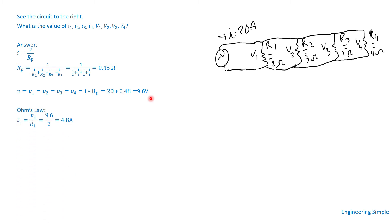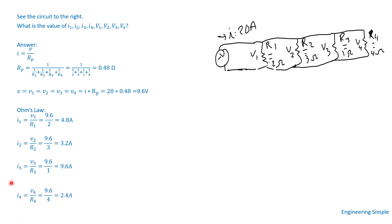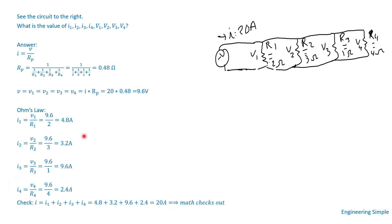Now we apply Ohm's law for each resistor. I1 equals V1/R1 equals 9.6/2 equals 4.8 amps. We do the same for I2, I3, and I4. As a check, the sum I1 plus I2 plus I3 plus I4 equals 4.8 plus 3.2 plus 9.6 plus 2.4, which equals 20 amps — so everything checks out.